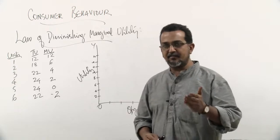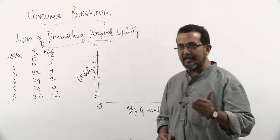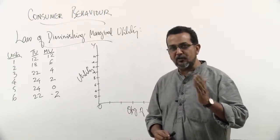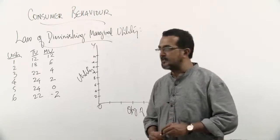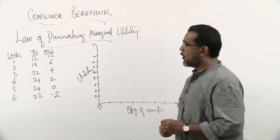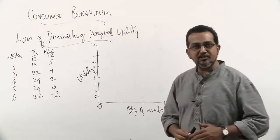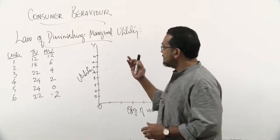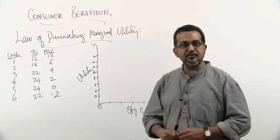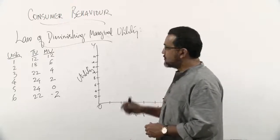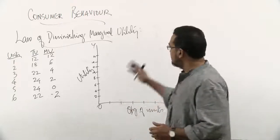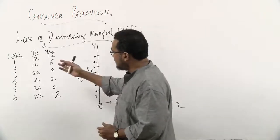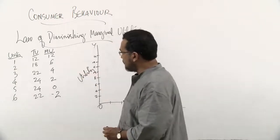In the earlier session, having understood the meaning of utility and the differentiation between total utility and marginal utility, let's come to the law of diminishing marginal utility. Diminishing refers to decreasing, marginal refers to additional. To understand this law, let's take the example of the same table that we saw in the earlier session.